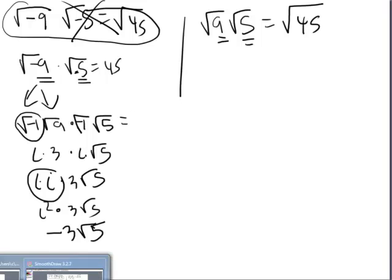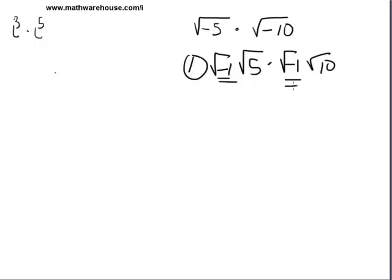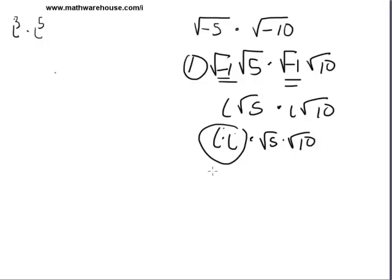So whenever you encounter problems like this — the square root of negative five times the square root of negative ten — remember step one is to first take out the square root of negative one. Rewrite the square root of negative five as the square root of negative one times the square root of five. The square root of negative ten we rewrite as the square root of negative one times the square root of ten. These become i, so we have i root five times i root ten. Since it's all multiplication, we can rearrange as i times i times root five times root ten. i times i is i squared. Square root of five times square root of ten is the square root of 50. i squared is negative one, so we now have negative square root of 50.